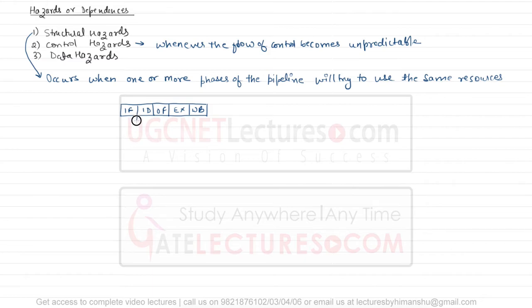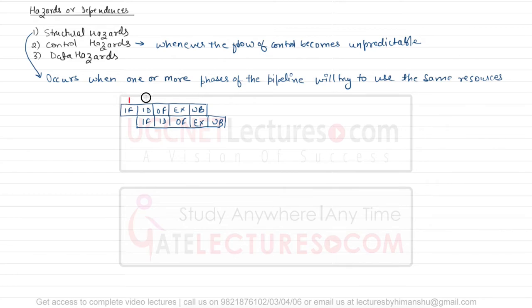In pipelining, when one instruction has completed instruction fetch and is now in instruction decode, we can bring the next instruction into instruction fetch. So there will be multiple instructions overlapping across stages: instruction fetch, instruction decode, operand fetch, execute, and write back. This diagram represents clock cycles with different instructions — instruction 1, instruction 2, instruction 3, and so on.